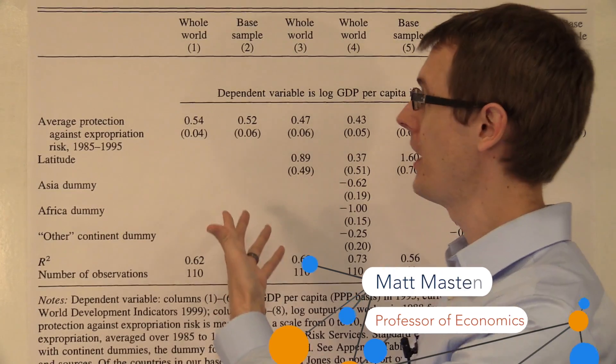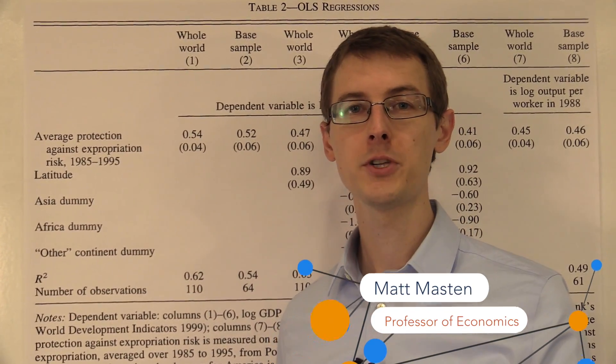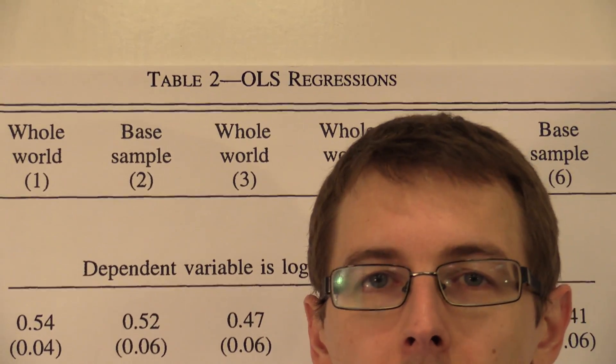We've talked about how to interpret the numbers in a regression table, but how do you actually compute these numbers in the first place? Well, the number one way to do it is OLS, Ordinary Least Squares.